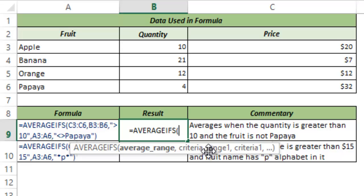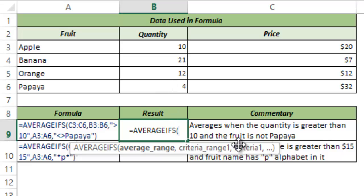The second argument is CRITERIA_RANGE1 and the third argument is CRITERIA1. CRITERIA_RANGE1 is the set of numbers, alphanumeric characters, or names that contains the criteria. The third argument is the exact criteria that you specify. Similarly, you can have more than one criteria, so you can have CRITERIA_RANGE2 and CRITERIA2, and continue adding arguments as needed.